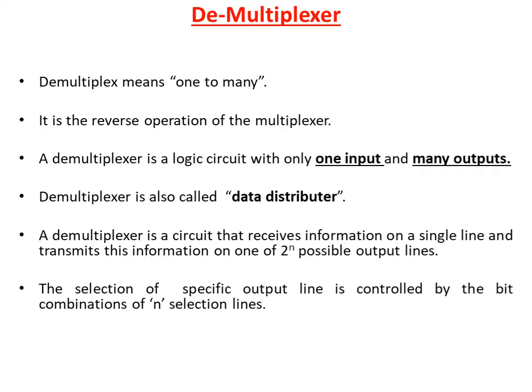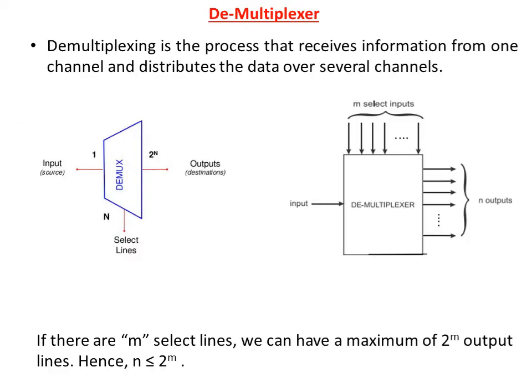It is a circuit that receives information on a single line and it transmits this information on 1 of 2 power n possible output lines. The selection of a specific output line is controlled by the bit combination of selection lines. D-multiplexing is the process that receives information from one channel and distributes the data over several channels.